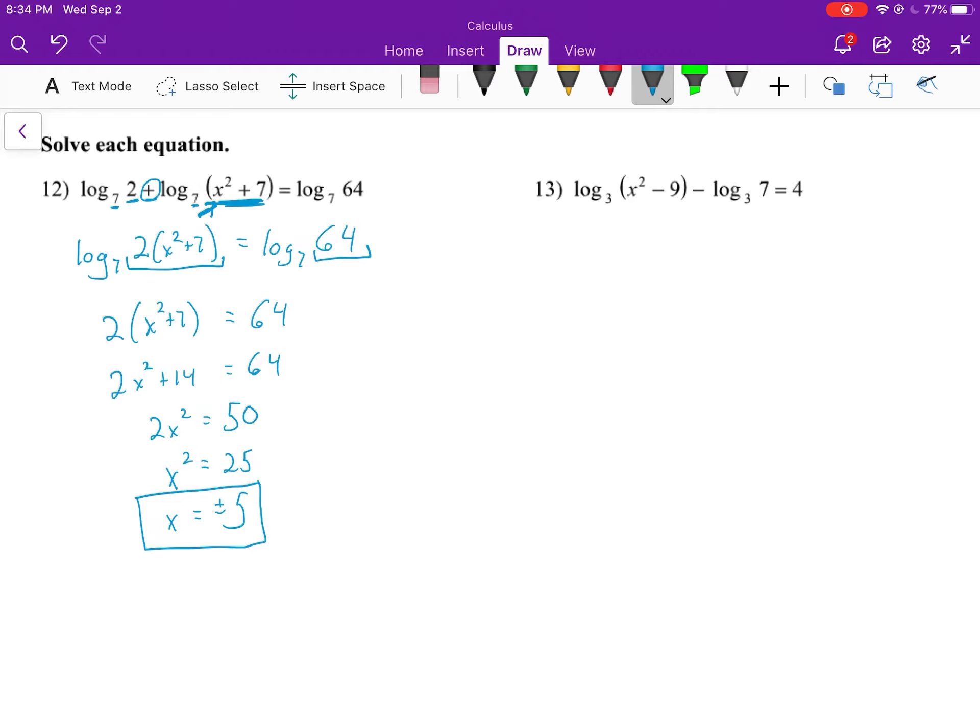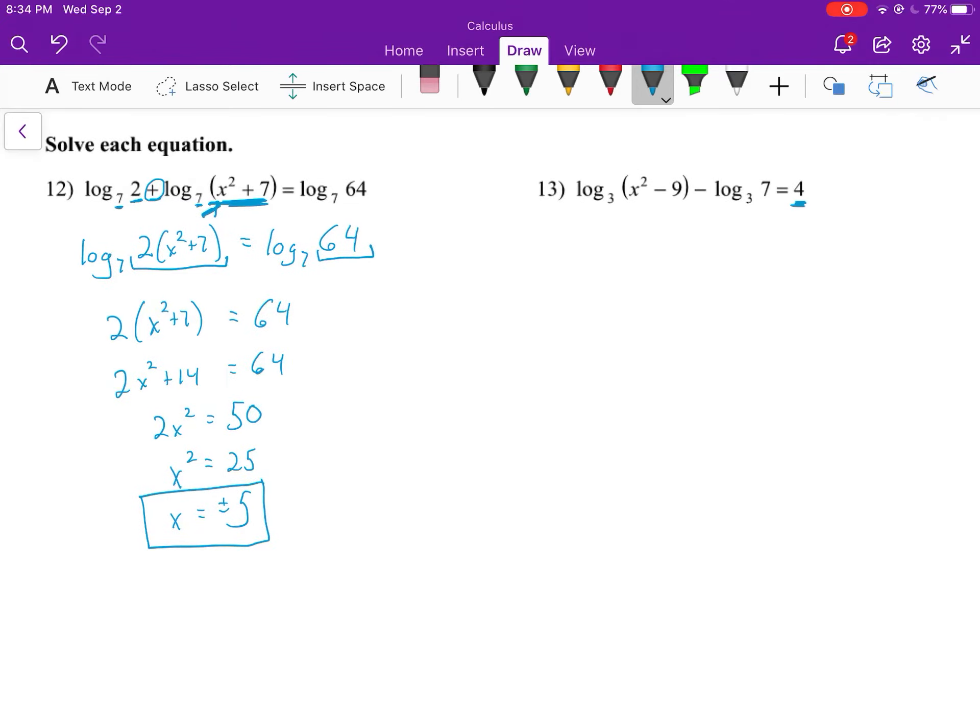Moving to number 13. This one has a different structure - we have a constant on the right side. We still start off similarly by simplifying the left side into one term. This is subtraction, so we'll use the quotient rule. With subtraction of logarithms with the same base, we can write log base 3 of (x² - 9)/7 = 4.